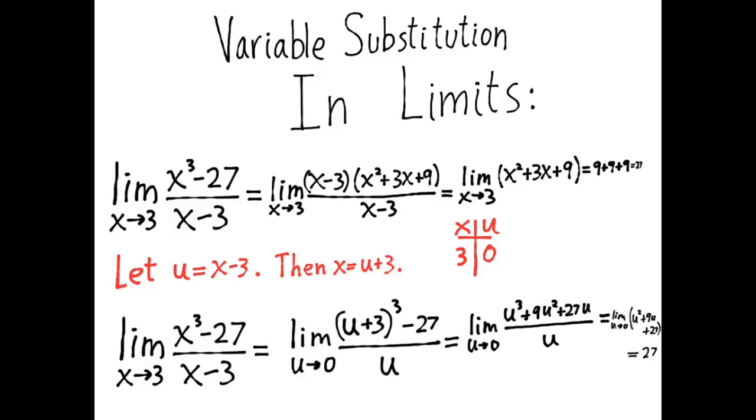So this becomes the limit as u approaches 0 of u plus 3 cubed minus 27. And then if I multiply out u plus 3 cubed, expand that, and then the last term cancels with the 27, and I get a polynomial in u. And it doesn't have a constant term, so I can divide out the u, and that's what gets rid of the 0 over 0 problem.